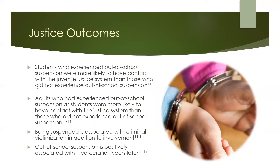Out-of-school suspension is also related to justice system involvement. Students who experienced out-of-school suspension were more likely to have contact with the juvenile justice system, and later in adulthood with the justice system in general. Out-of-school suspension was also positively associated with more severe outcomes in adulthood, such as incarceration. This shows how out-of-school suspension may play a role in the bigger picture of the school-prison nexus, something we will discuss later as well. Not only is out-of-school suspension more related to justice involvement, it is also related to higher rates of criminal victimization.